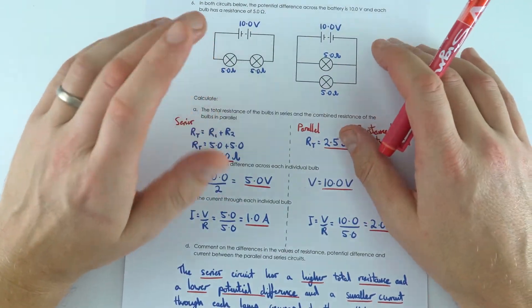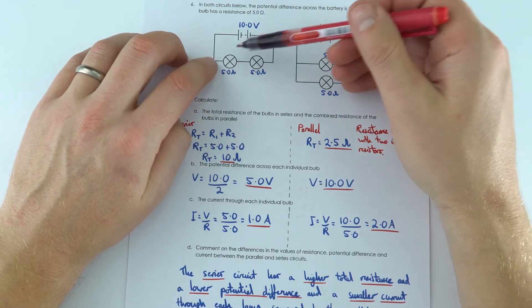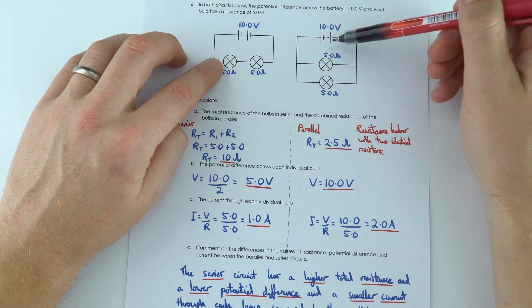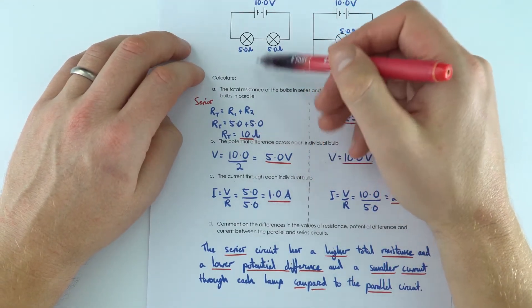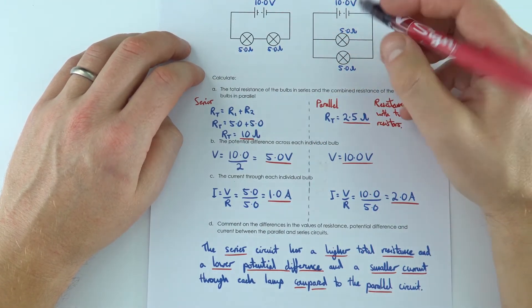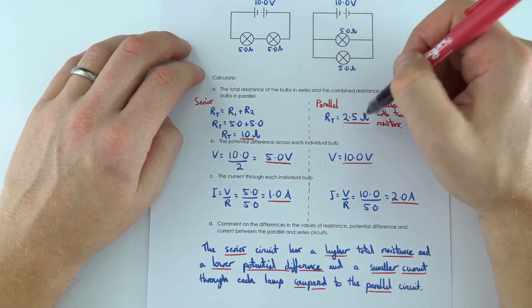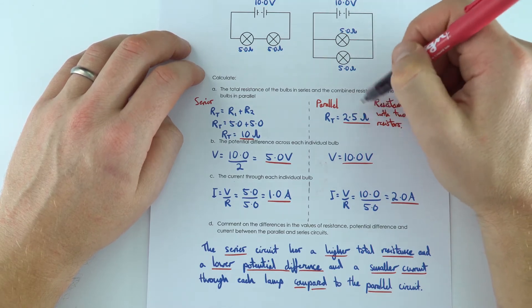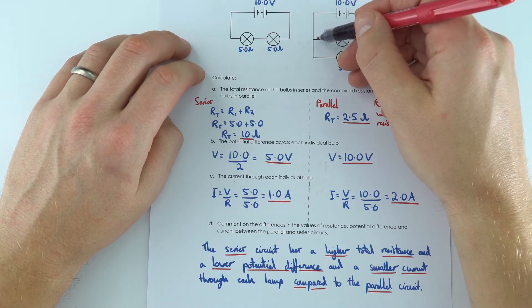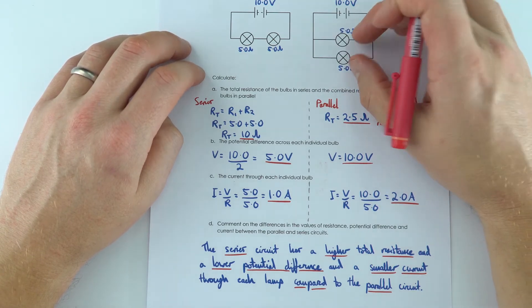Okay next question we had, this is more of a comparison between series and parallel circuits. We have the same components connected either in series to a 10V supply or in parallel to that 10 volt supply. Now to work out the total resistance we just added them together in series. In parallel because we've got two things with the same resistance their combined resistance is actually half of their value so that's why it's 2.5 ohms.